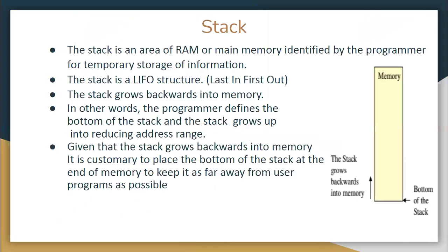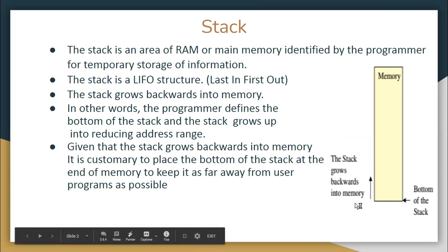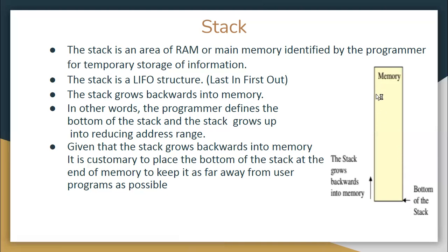In a microprocessor we have RAM — random access main memory. You can treat a portion of memory as a stack. The stack is an area of RAM or main memory identified by the programmer for temporary storage. Memory starts at 0000 and goes up to FFFF. Programs are written from the top and the stack grows from the bottom, so when you push one value the stack pointer moves up, and when you push another it moves further — the stack grows upwards while the program grows downwards.